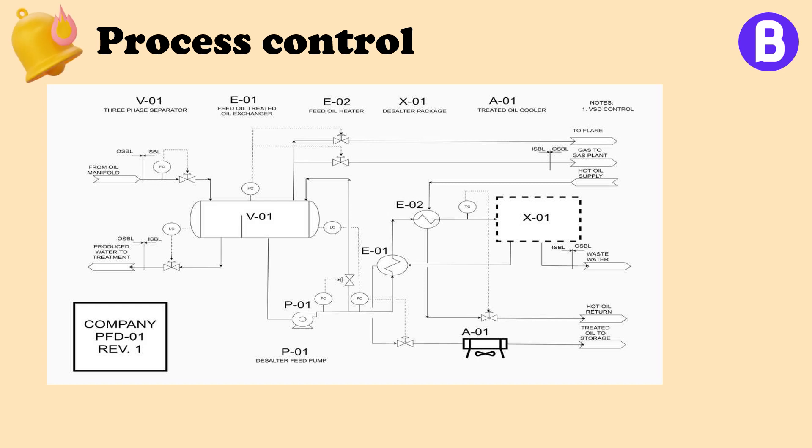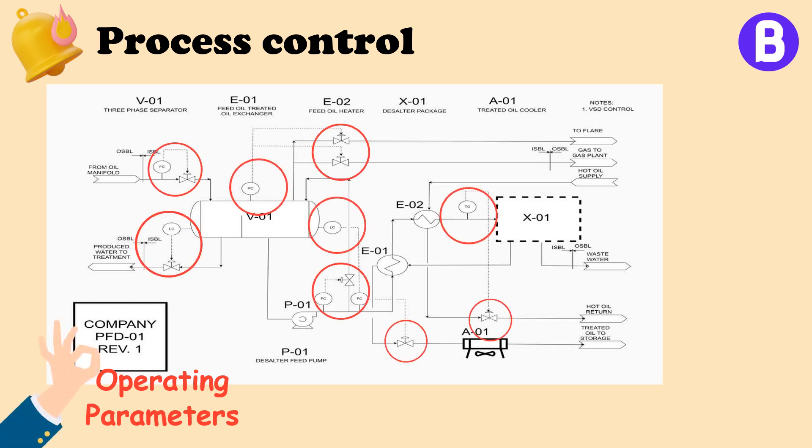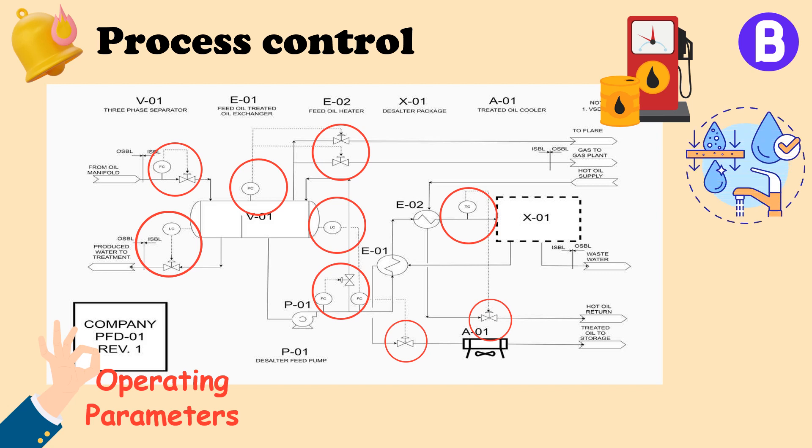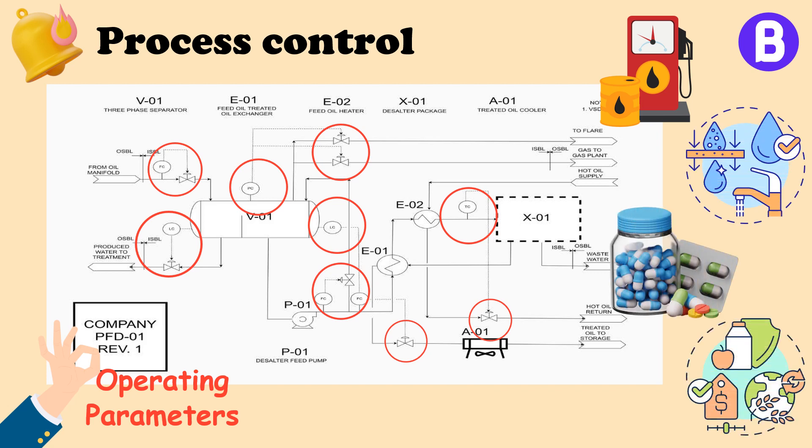Process control is essential in any plant to ensure that the operating parameters are within their acceptable limits. We can see different control loops controlling various equipment in any plant, whether we are talking about oil and gas, petrochemicals, water treatment, pharmaceutical, chemical, or food industry. In all these various industries, process control schemes are considered.